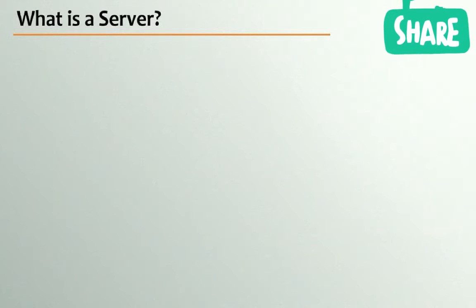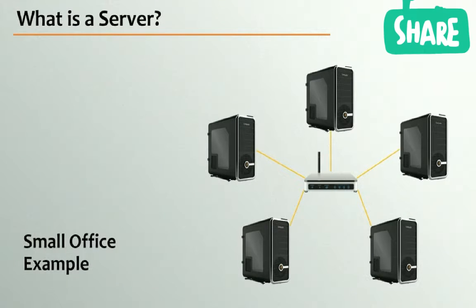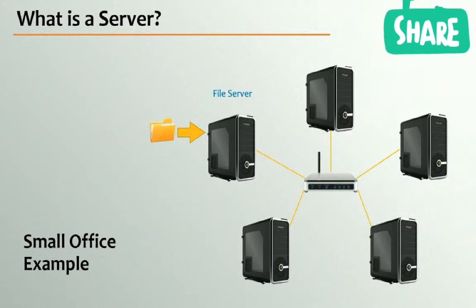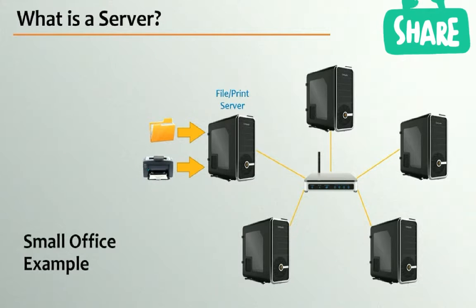I'm going to start with a small office example of five computers. These computers have all been connected together, forming a network. On this network, one of the five computers has a shared folder containing files, and the other four computers can access and modify these files — making it a file server. This server could also have a printer attached, making it a file and print server. There's no limit to how many services any given server can provide.